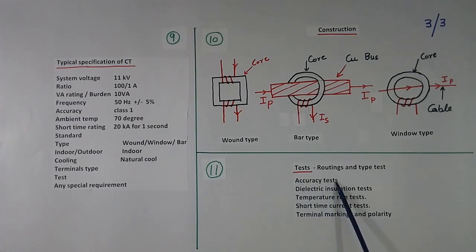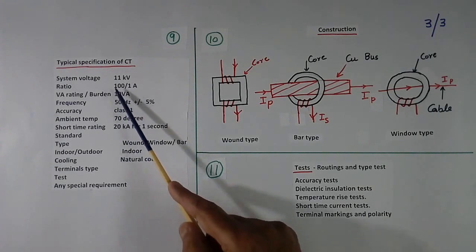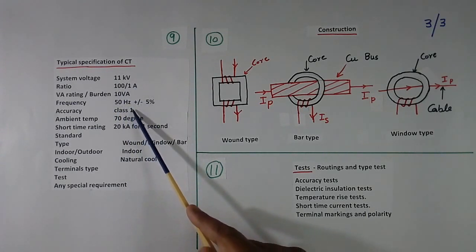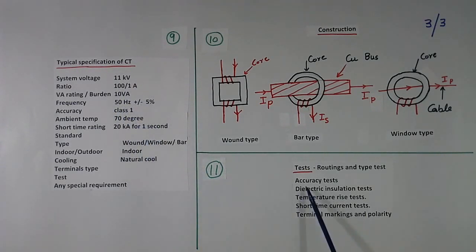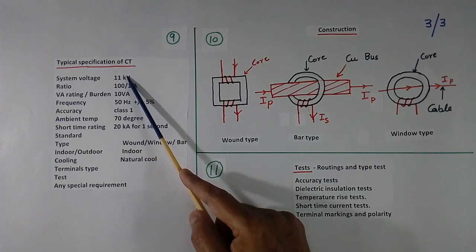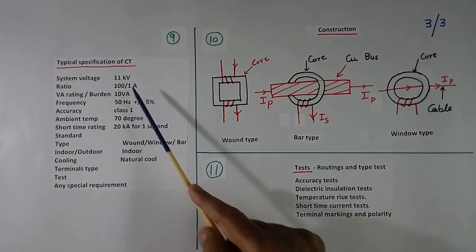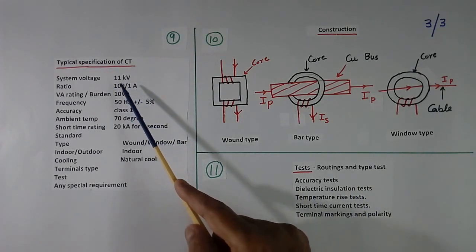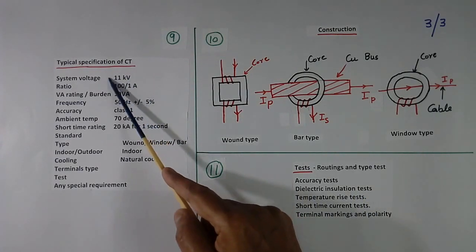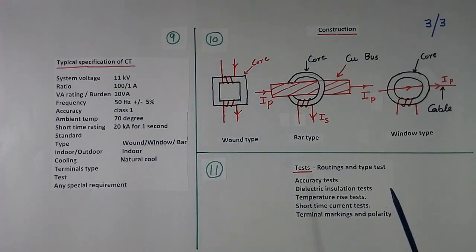First accuracy test. We have written here accuracy class 1 and ratio this. So we check whether it is meeting 1% tolerance or not. Then we check insulation test. This is 11 kV. So we have to check whether 11 kV it can take or not. Generally voltage apply here will be much more than this. For example, if it is 230 V, voltage apply will be 2.5 kV for few minutes.